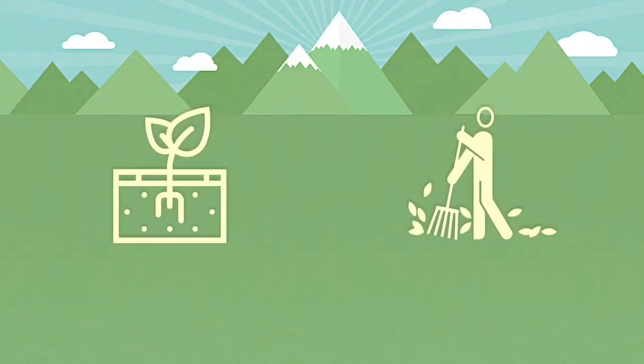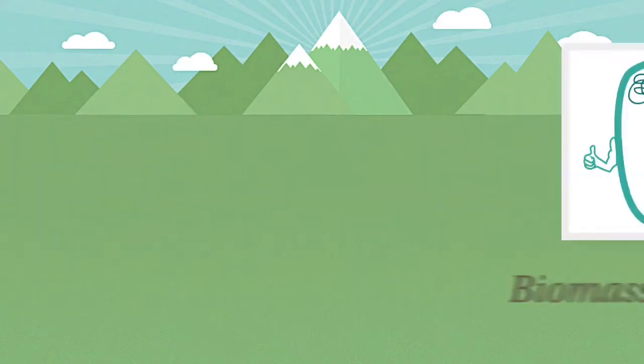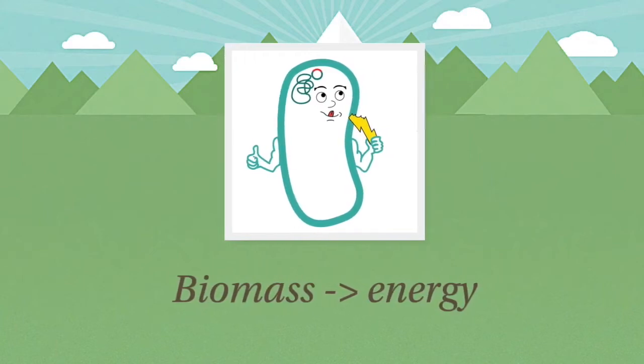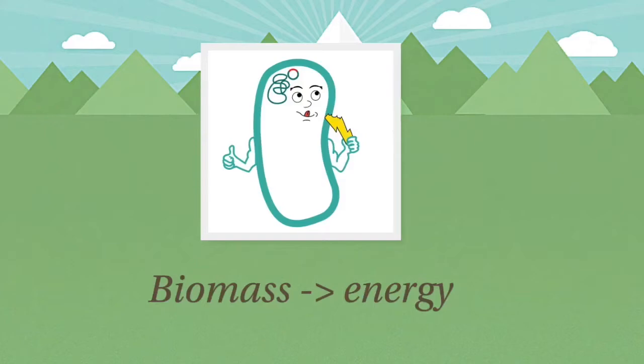Biomass is being put into the ground by roots of the plants or just by decaying plants. Biomass is food for the bacteria. Just like humans, you turn it into energy. In this process an electron and a proton is released.